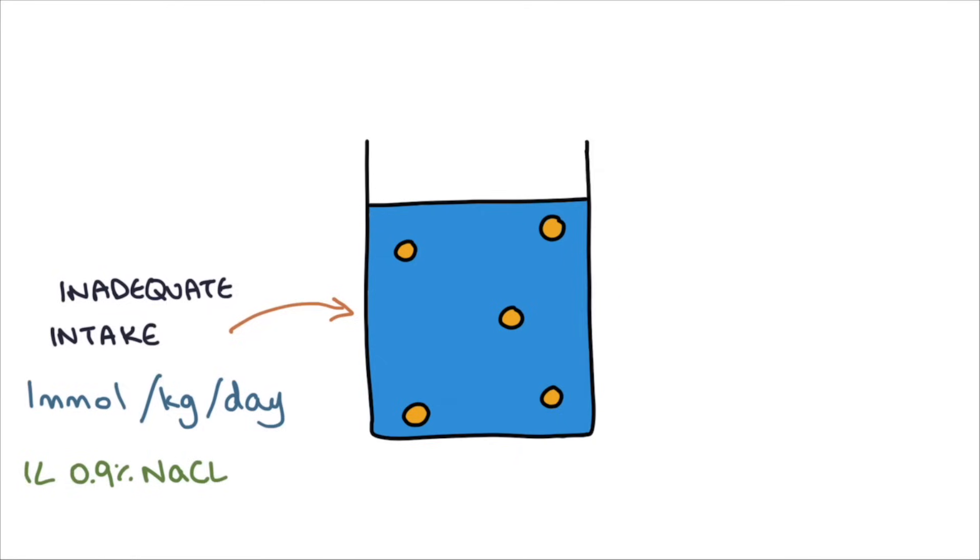The other way that the concentration of sodium can be altered is by how much sodium is in the body. Imagine the container contains a fixed amount of water. Inadequate sodium intake over time can cause hyponatremia. However, the body only requires one millimole per kilo per day of sodium under normal conditions, which is relatively easy to achieve with a normal diet. For example, a one liter bag of saline contains 150 millimoles of sodium, which is more than enough for most adults.